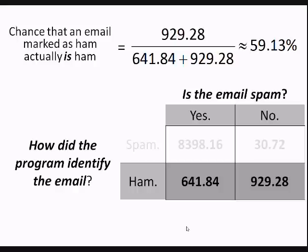Some of you might look at that 59% and say that's kind of low — and compared to the 99.6% for spam identification, it is. If it says it's spam, there's a 99.6% chance it actually is spam. I dug a little deeper, and the reason this is so low is because they want to err on the side of caution — letting stuff through rather than blocking something that's legitimate. That's the closest I was able to get to a reason for the discrepancy.